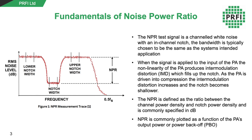We then create a notch in this noise signal where the noise has been filtered out. The noise power ratio is then simply the ratio of the power density in the notch compared to the power density in the channel.